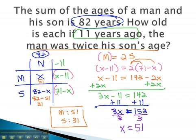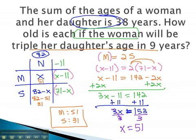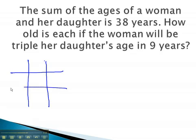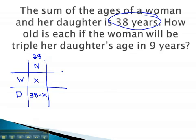Let's try another example, where we can see this total time. In this problem, we see that we're comparing the ages of a woman and her daughter. Right now, the sum is 38. We make the woman x, and the daughter the total, or 38, minus x.